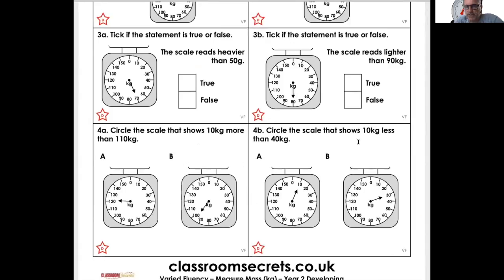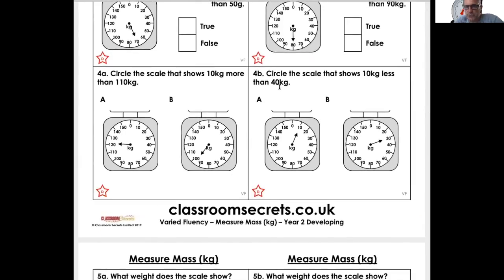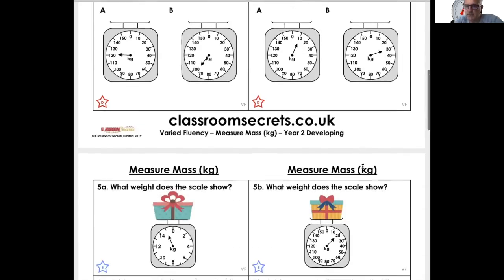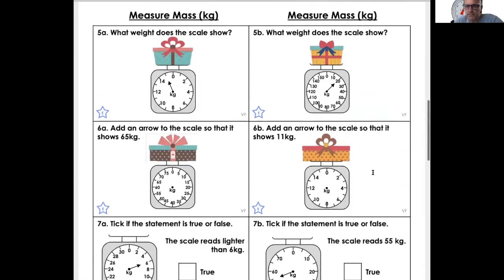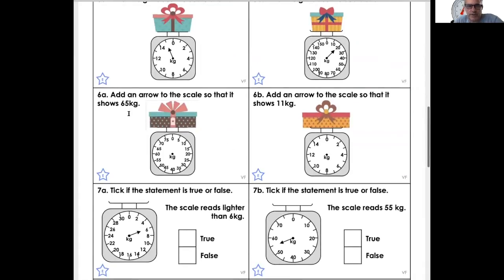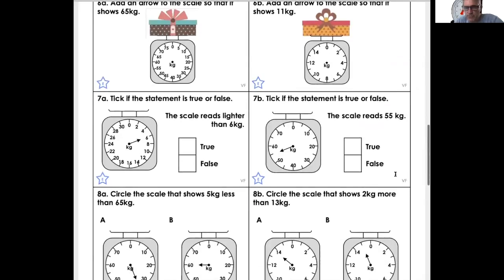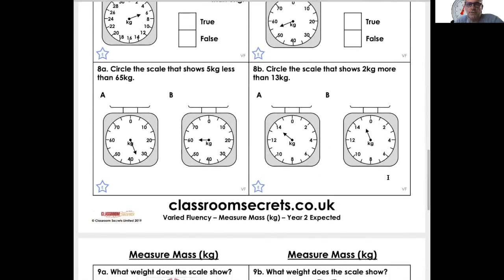Circle the scale that shows 10 kilograms less than 40. So 40 take away 10 is 30. What does the scale show? Counting in tens, 65. True or false, more than 13 kilograms? It's 15. You need to read the questions, kids. You did well for the last one. Let's hope it does this time.